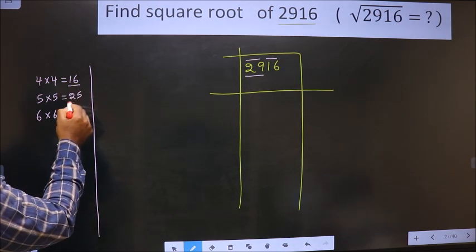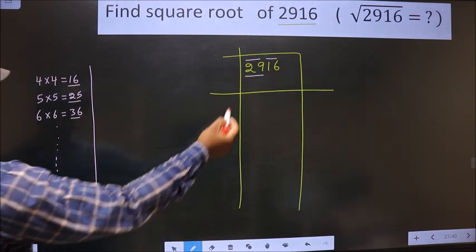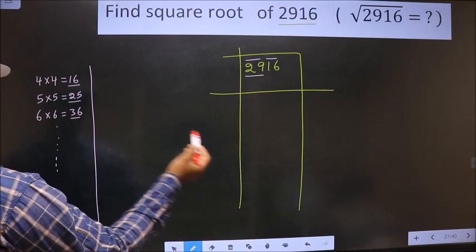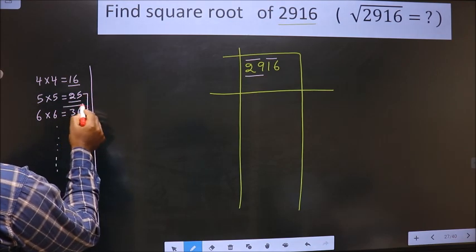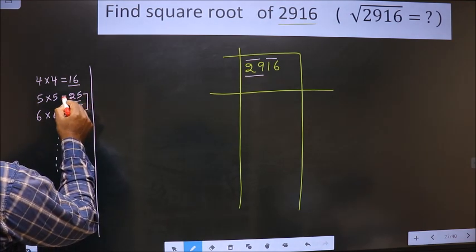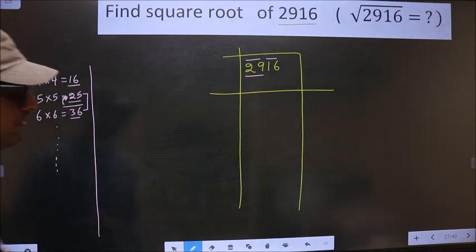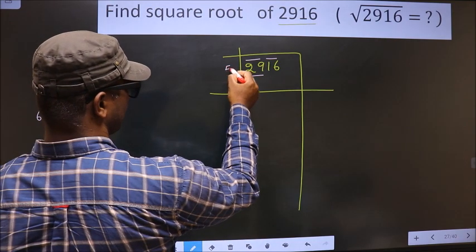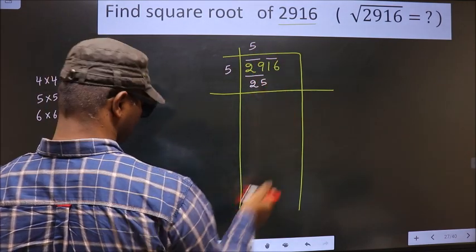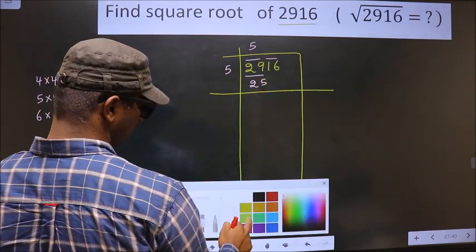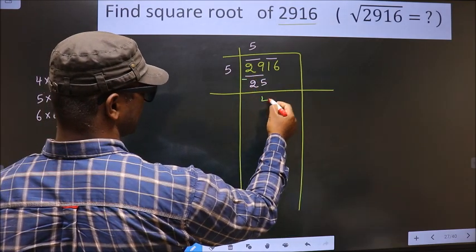These numbers are called perfect squares. Here we have 29 — it lies between 25 and 36. So we take the smaller number, that is 25, which is 5×5. Now we subtract: 29 minus 25 is 4.